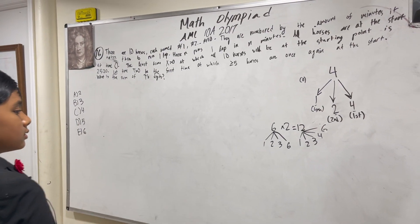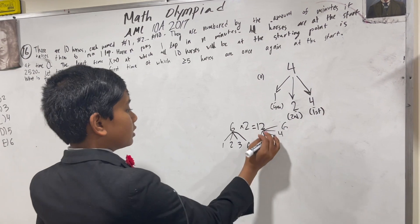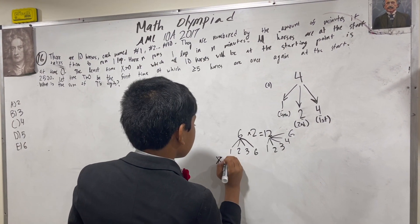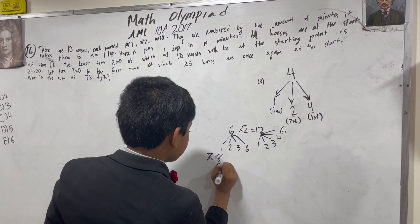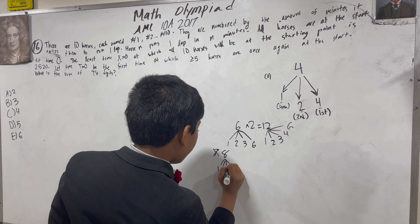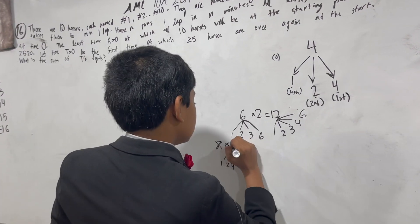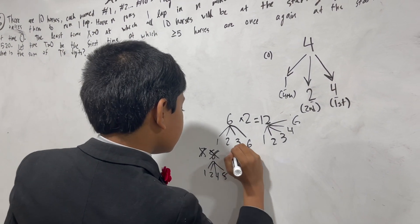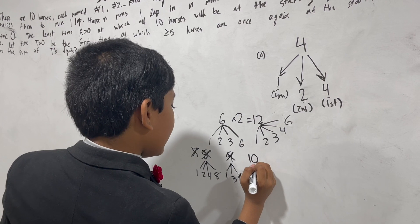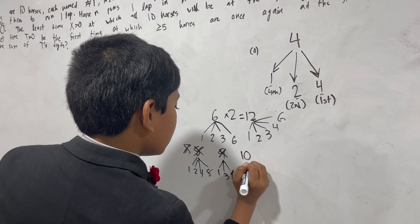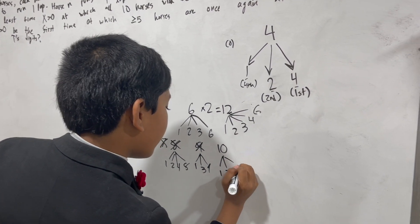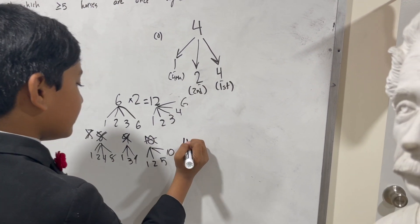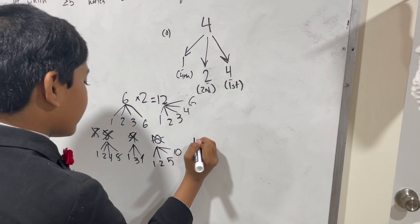Are there any numbers below twelve? Well, let's search. Seven is prime. Eight has one, two, four, and eight. Nine only has one, three, and nine. Ten is only one, two, five, and ten. And eleven is prime, so that would never count.